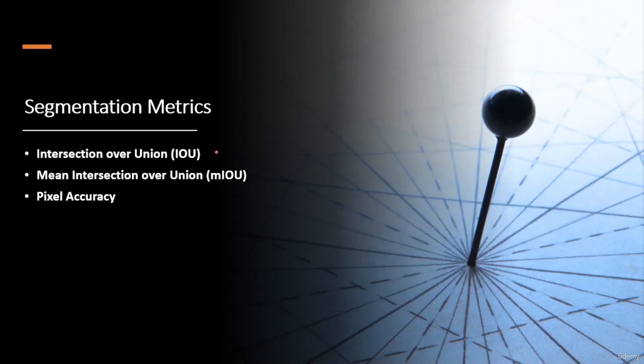Semantic segmentation is a type of image analysis that involves dividing an image into multiple segments or regions, each of which corresponds to a different object or background in the image. In order to evaluate the performance of a semantic segmentation algorithm, some common semantic segmentation metrics include intersection over union, mean intersection over union, and pixel-wise accuracy. These three metrics are commonly used to measure the performance of the segmentation model.